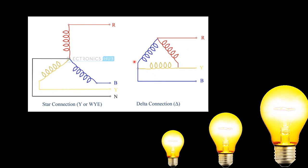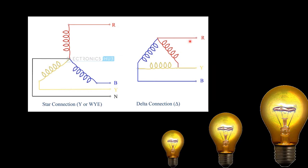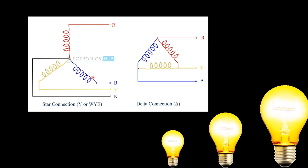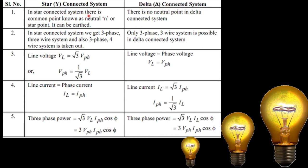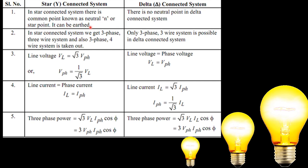What is the star connection and what is the delta connection? The star connection is connected to the Y shape. We are connected to the star connection, the delta, and the Y connection. There is a common point — the neutral point — in the star connection system, giving us a 3-phase 3-wire system and also a 3-phase 4-wire system taken out from the delta connection.